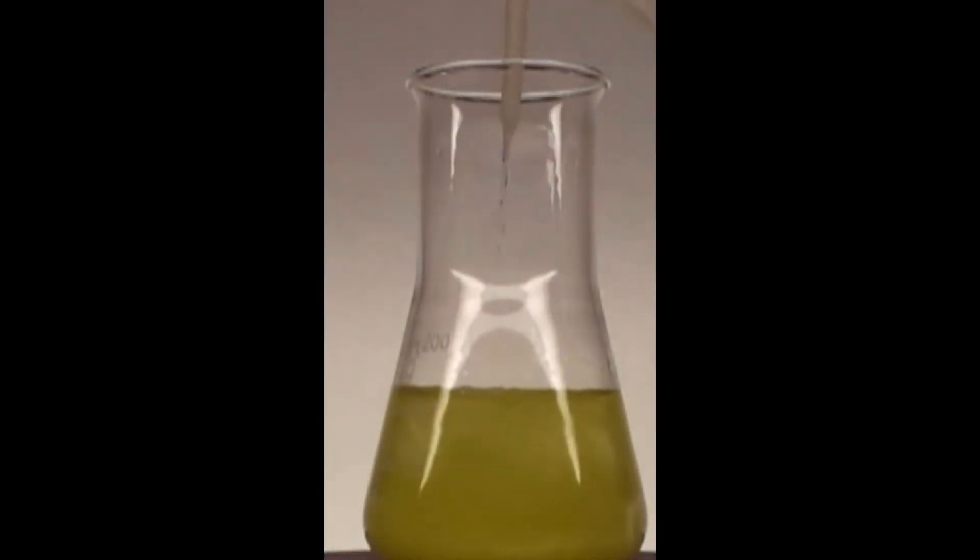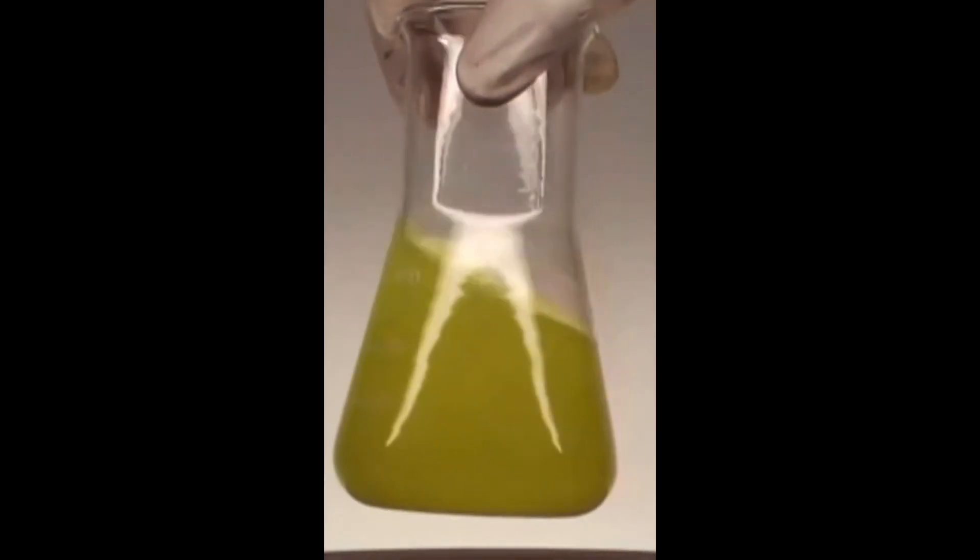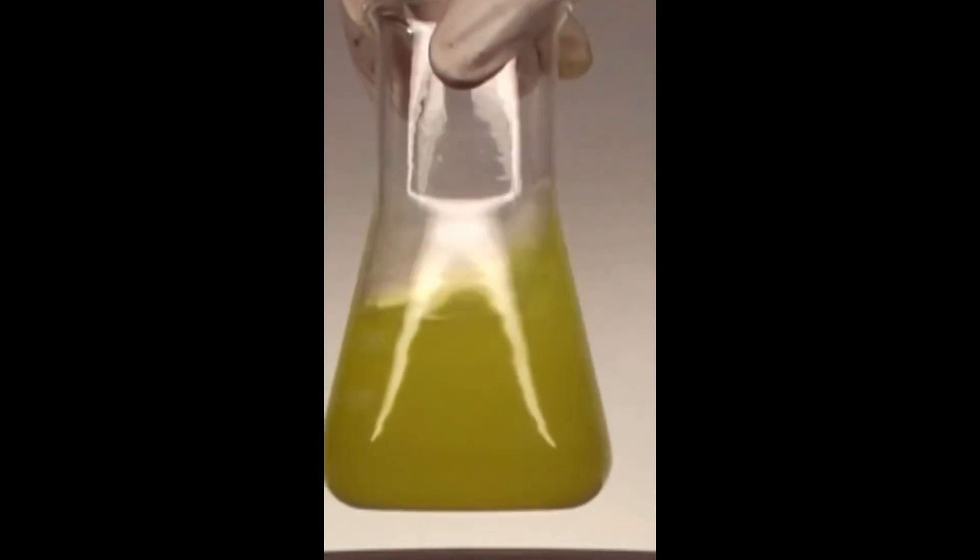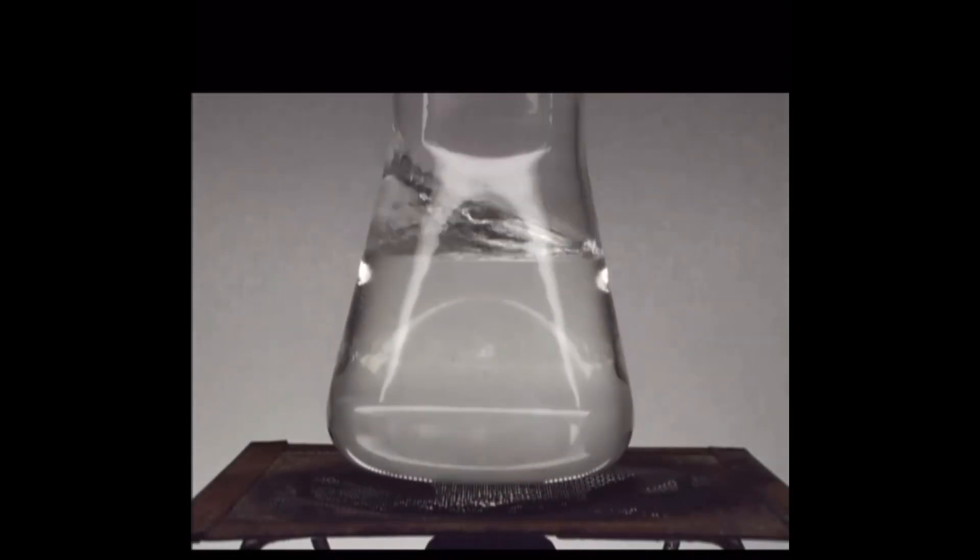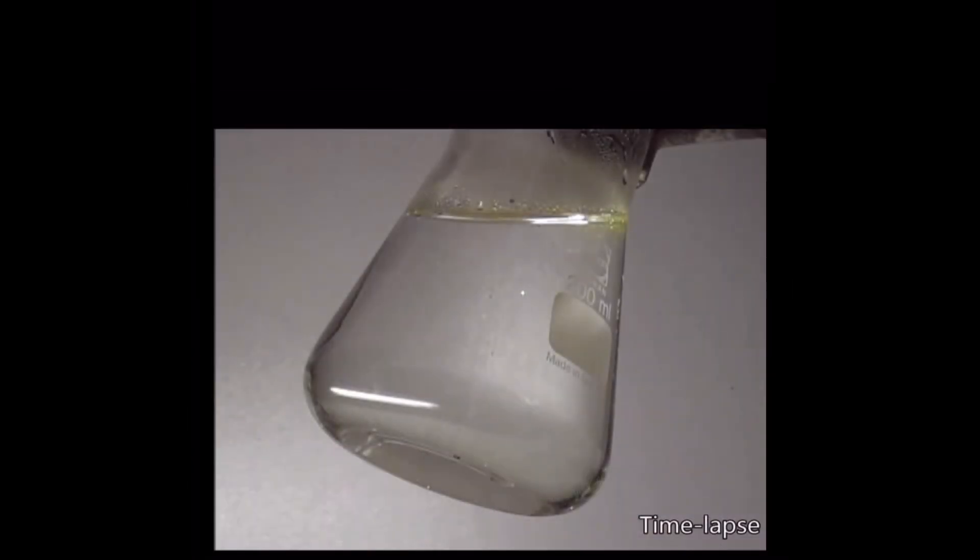When these two mix, a chemical reaction begins. Almost instantly, beautiful yellow lead iodide precipitates out of the solution. Heat it up, and the crystals dissolve. Let it cool, and the golden rain falls again.